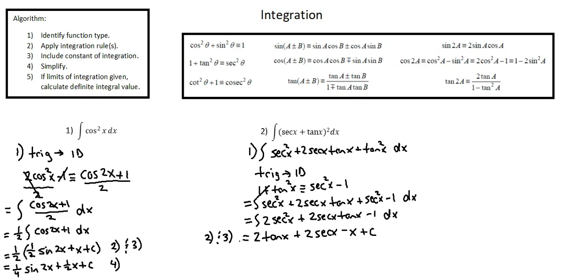Notice that we did not use a compound angle formula — those are the formulae in the middle column — in either of our examples. You might need to do so. Remember, you'll have these identities in the formula book, so you don't need to have all of these memorized, but you do need to be able to identify a scenario in which you need a trigonometric identity, and identify which identity to use. We've completed our requirements, and this concludes the lesson on using trigonometric relationships to integrate trigonometric functions.